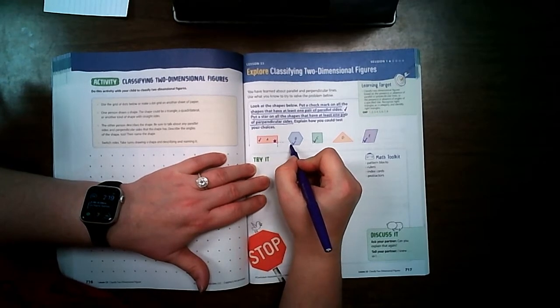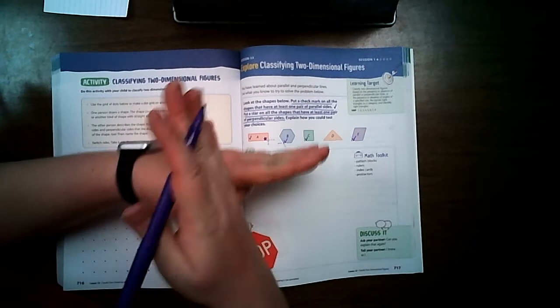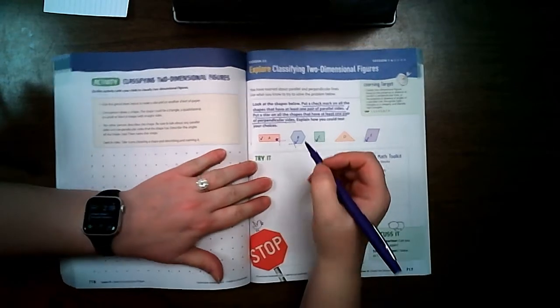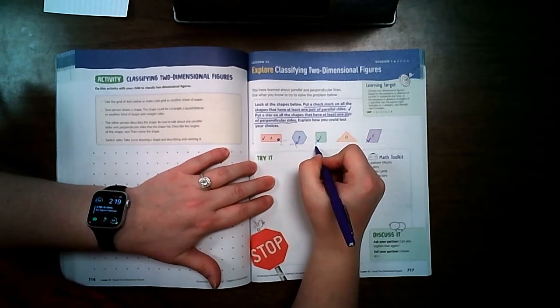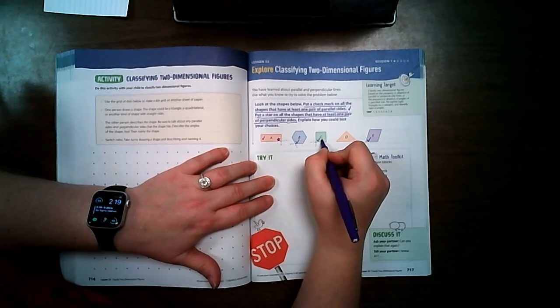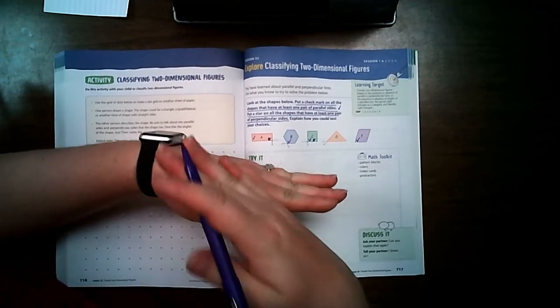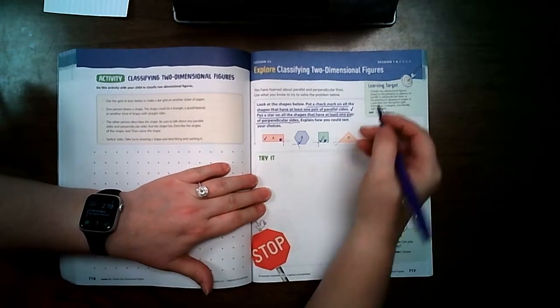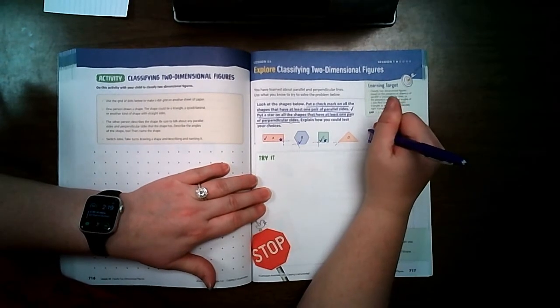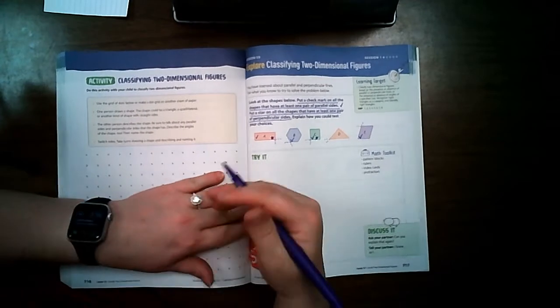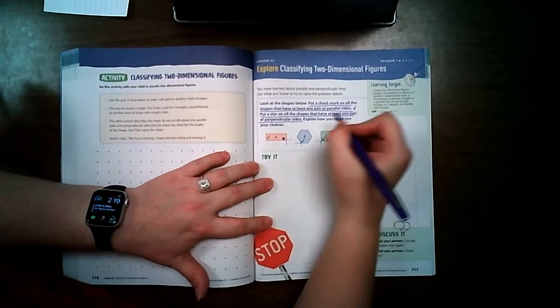These ones cross over each other but they don't cross exactly like this. They cross at an angle. The square does have it. Triangles cross over each other but they cross at intersecting. And these cross over each other but again they are intersecting.